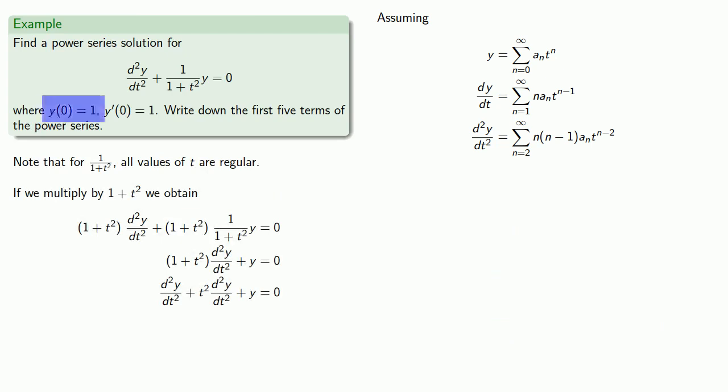Our initial condition gives us that y0 is equal to 1. Since we assumed a series form of our solution, if t is equal to 0, y0 is going to be a0. And so a0 is equal to 1.